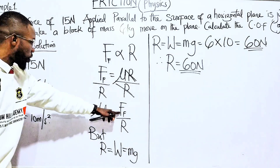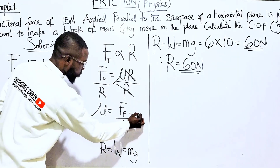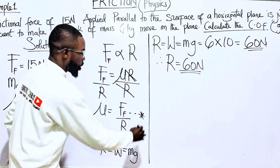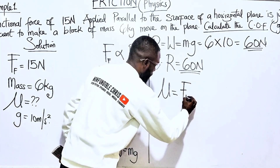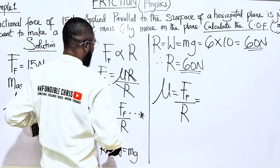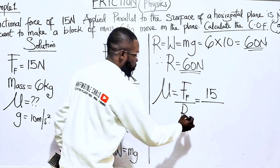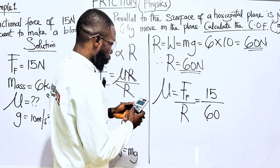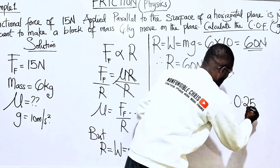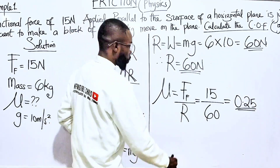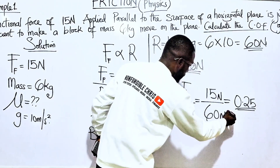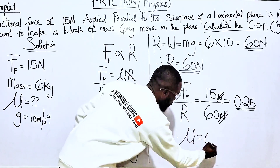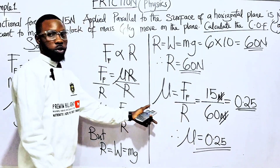Therefore, μ = 0.25. This question is very simple and straightforward. In the next video, we'll look at another question to further address what we're working on.